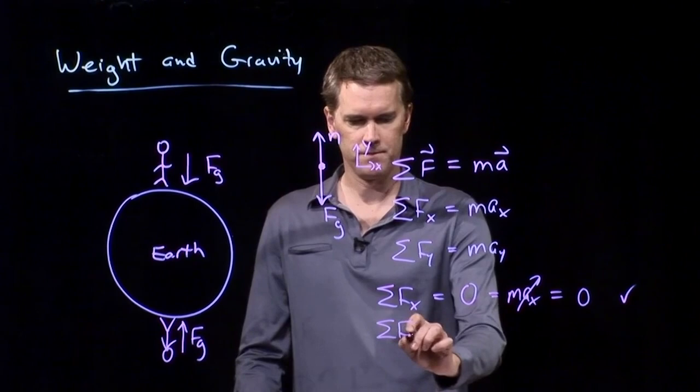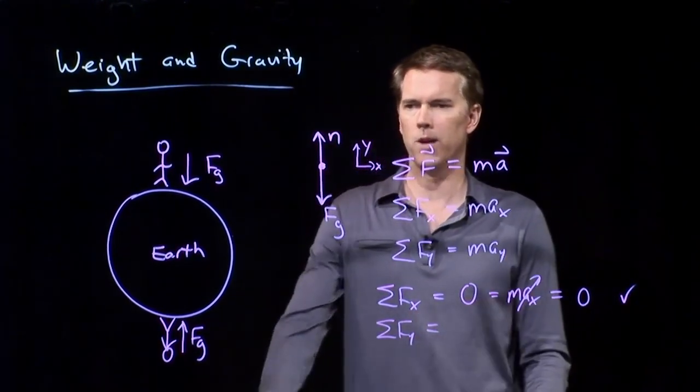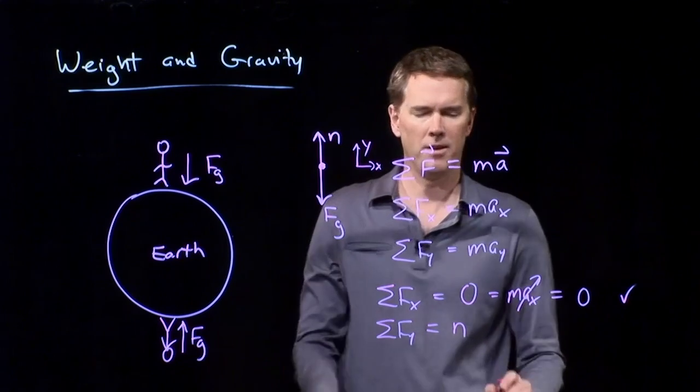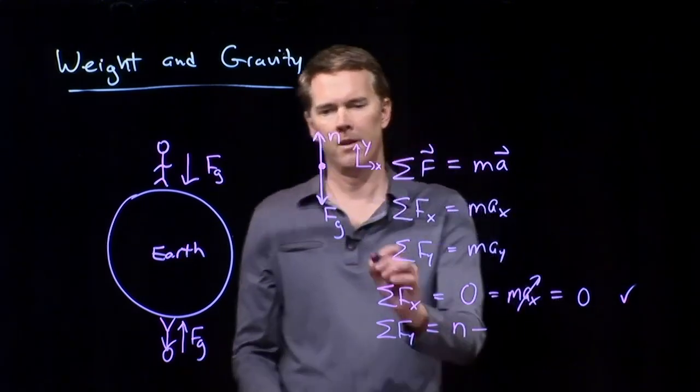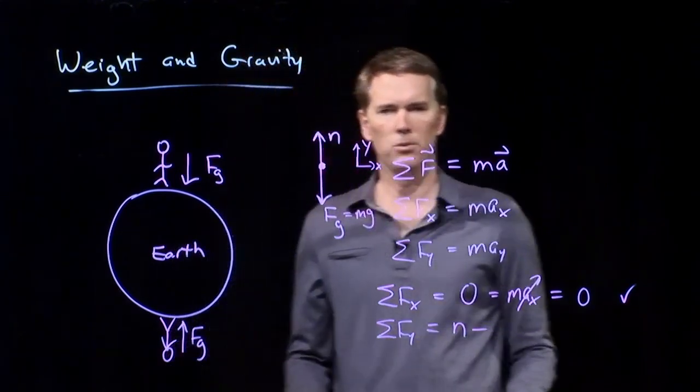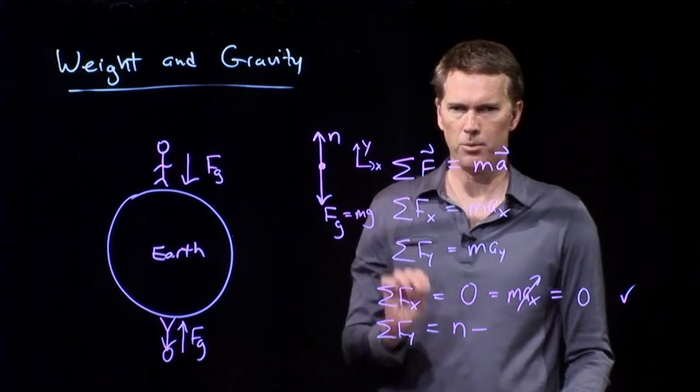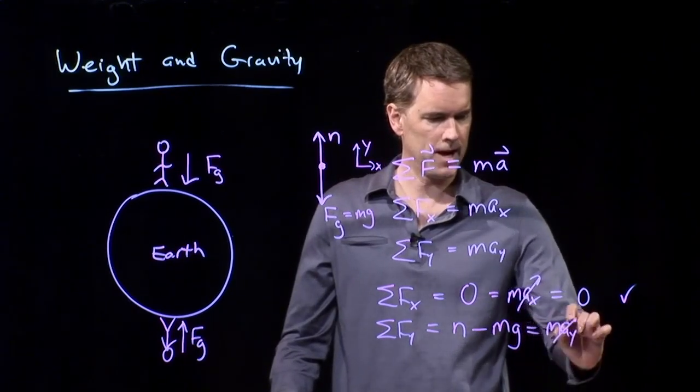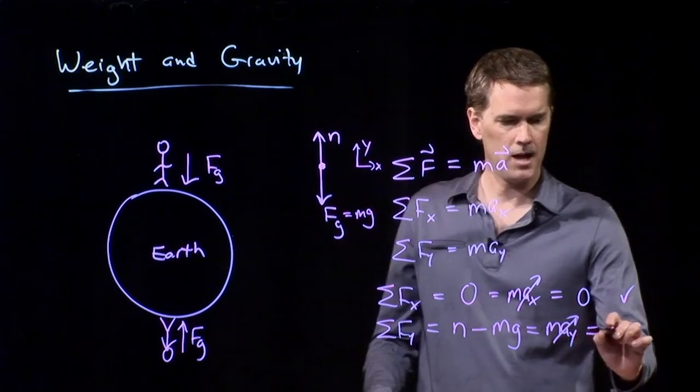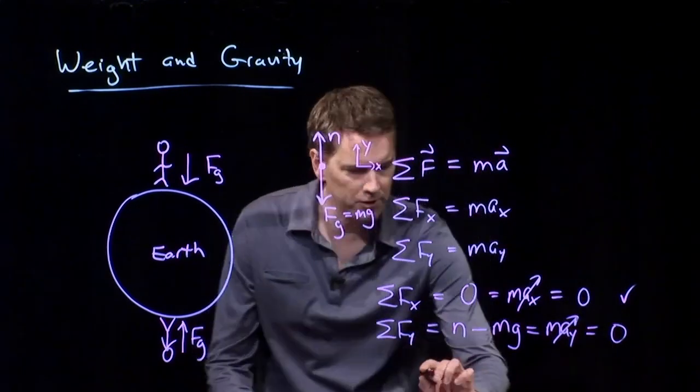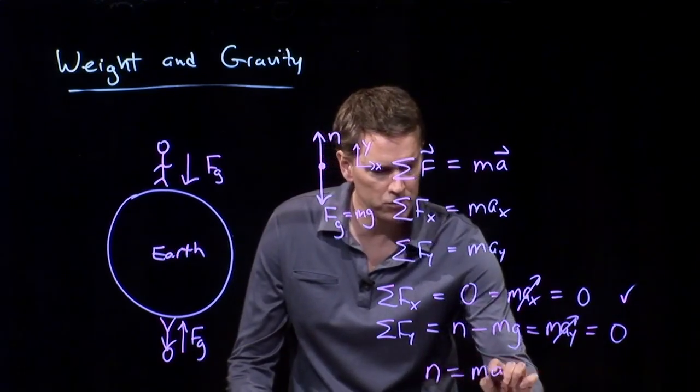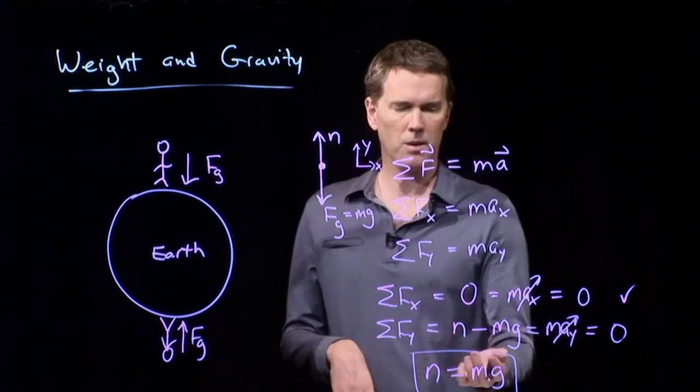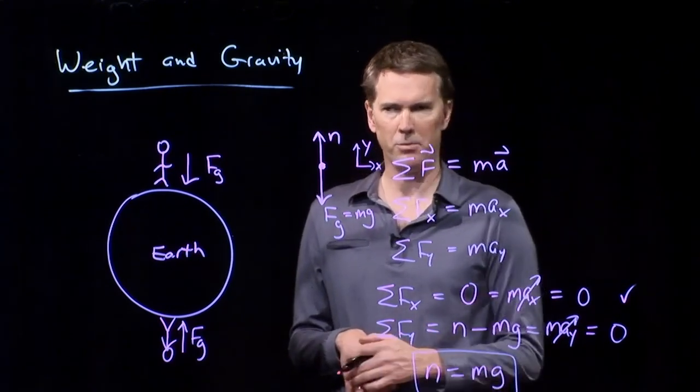But what about the y direction? In the y direction, we have the normal force from the Earth pushing up on us, n. And we have Fg down. But we know exactly what Fg is. It's equal to your mass times gravity, 9.8 meters per second square. So we put a minus mg right there. That's equal to the mass times the acceleration in the y direction. And we said that that has to be equal to zero. And so you just get n equals mg.